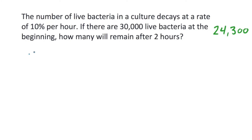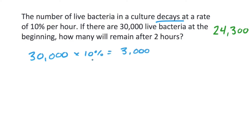So we have 30,000 bacteria to start with. It's going to decay, which means decrease, by 10%. So let's multiply by 10%, which equals 3,000. You can convert the 10% to a decimal: 30,000 times 0.1 equals 3,000. And now we have to subtract because we're decreasing. So 30,000 minus 3,000 is 27,000.